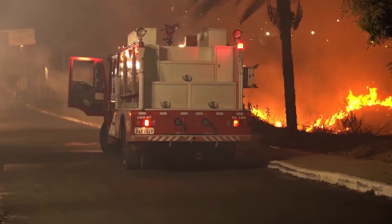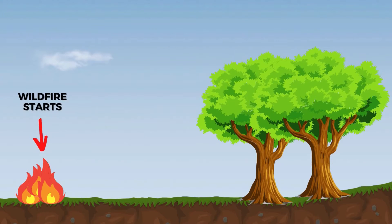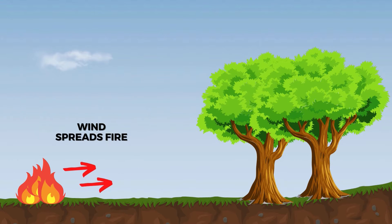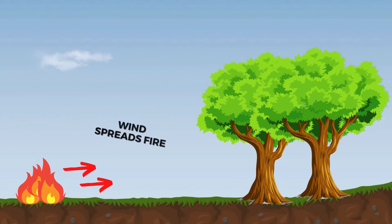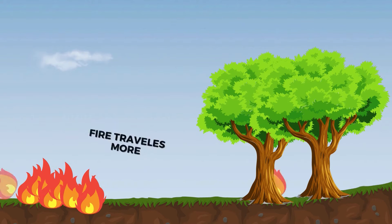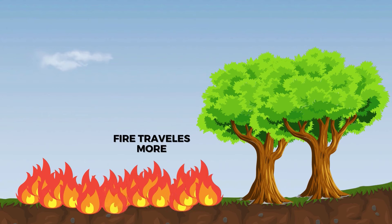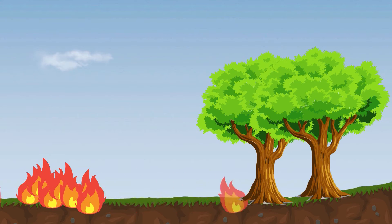As the fire spreads, tree canopies eventually ignite as well. Embers dispensed from burning trees travel several feet around the trees in every direction, adding to the intensification and expansion of a wildfire.